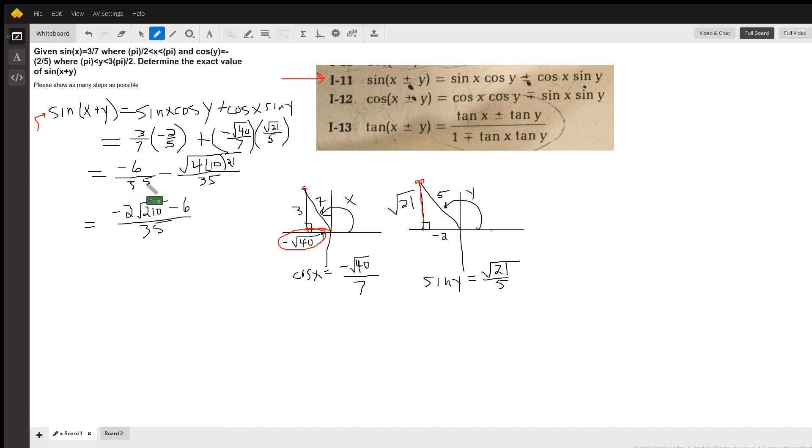So if we multiply these all together, this is what we get. I didn't say 40 times 21. I pictured 40 as 4 times 10 because I'm going to put this in simplest radical form. By taking the square root of that 4, which gives me minus 2 times the square root of 210 minus this 6, all over the common denominator of 35. That's your exact value right there.